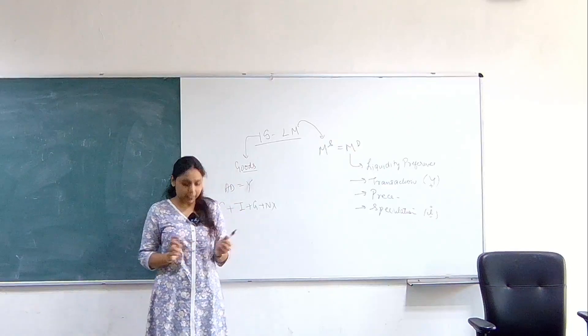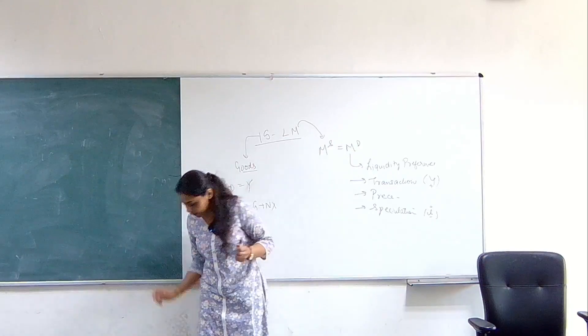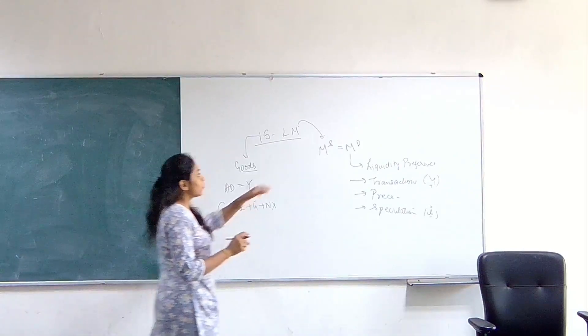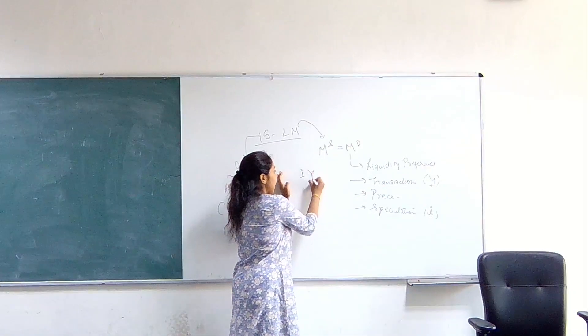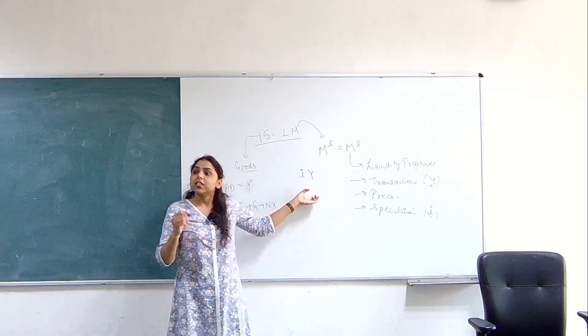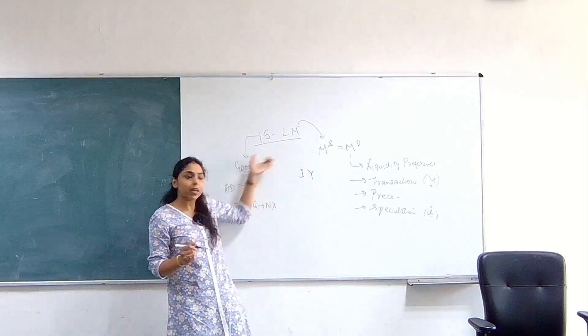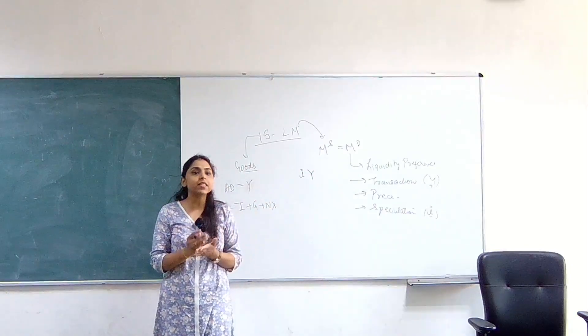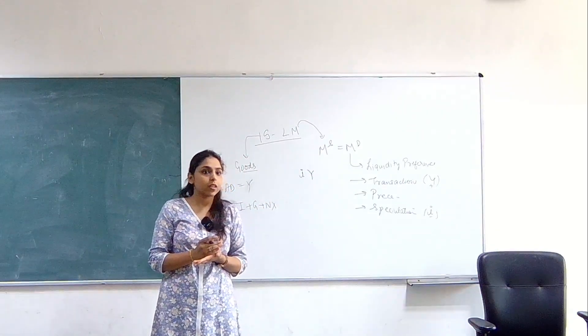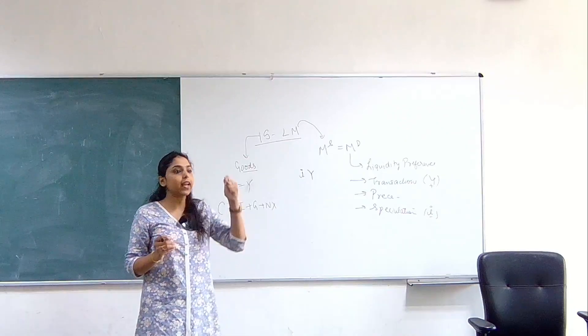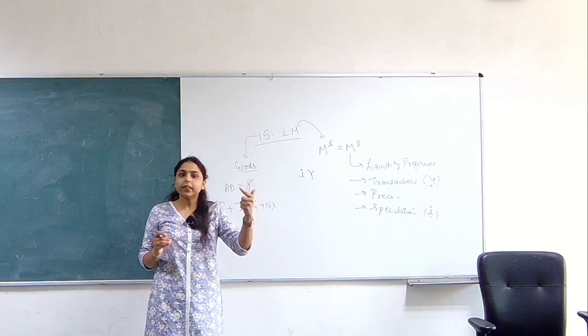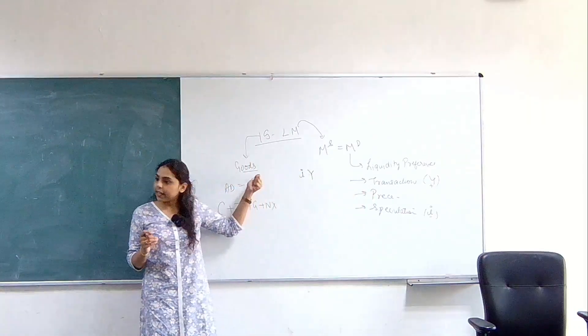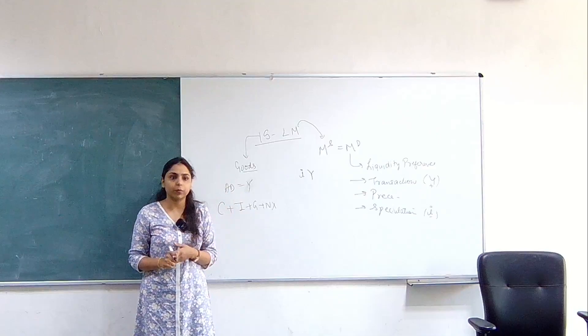Now, what we are going to understand is, in the IS-LM analysis, those levels of interest rate and income such that the money market and the goods market are simultaneously in equilibrium. These are those combinations of interest rate and income such that the money market and the goods market are simultaneously in equilibrium.